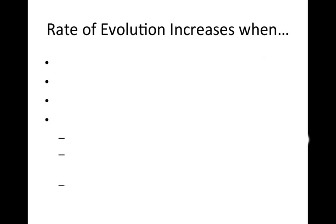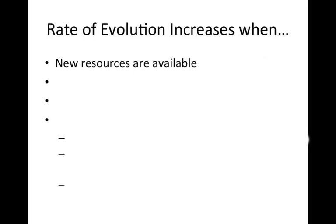For a species to evolve rapidly, a population has to have access to new environments and niches. If their environment is not changing, there's very little pressure for change. Access to new environments can happen in a number of ways — you could have new resources become available, and sometimes one population becomes adapted to another species that was a new available resource.